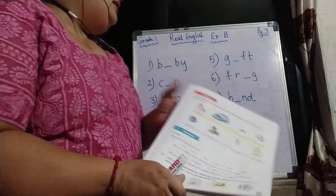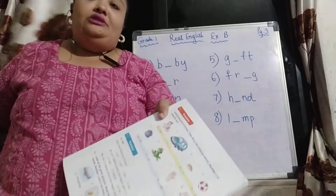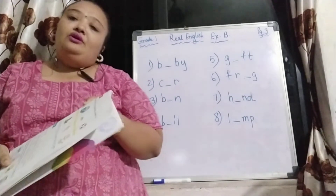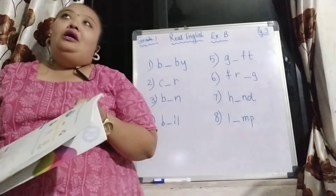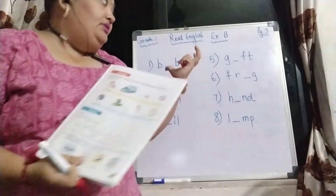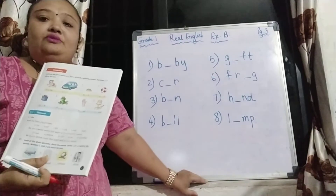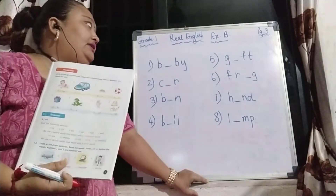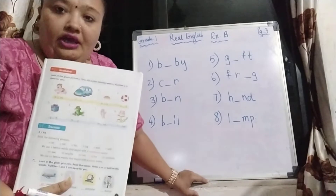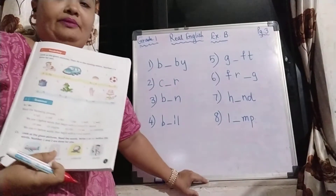What you have to do in this grammar? Consonants, vowels, consonants — this is a type of exercise. There are letters missing, so you have to complete this. A picture will be shown and you have to complete the spellings of the words.